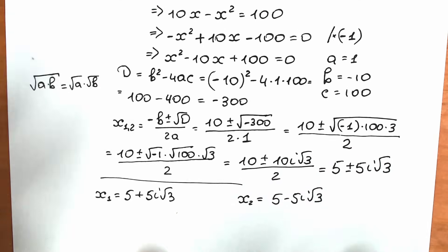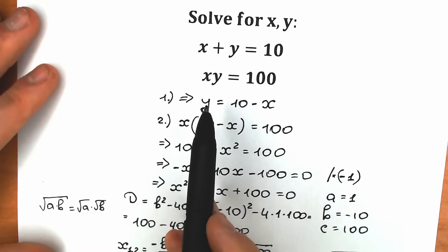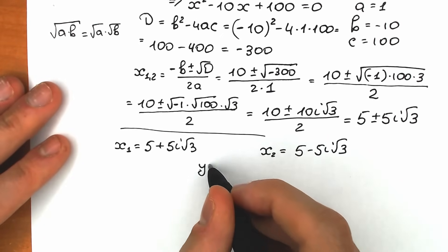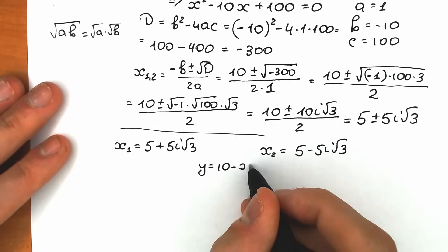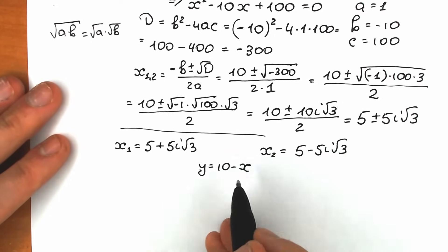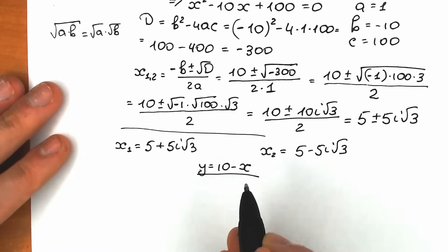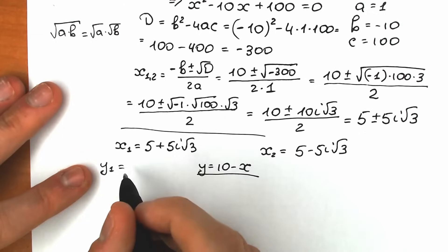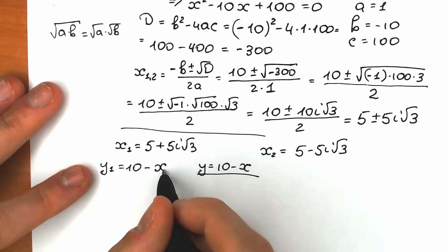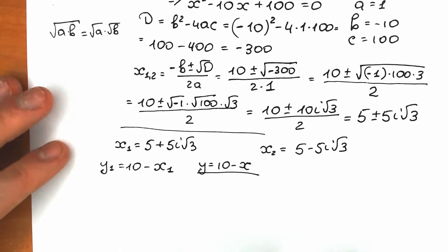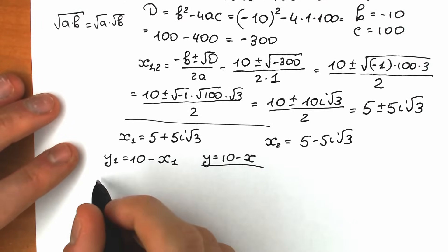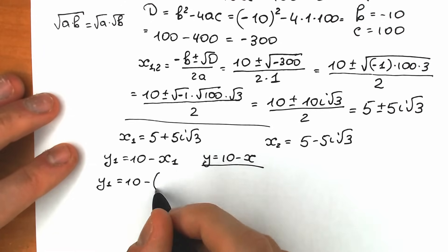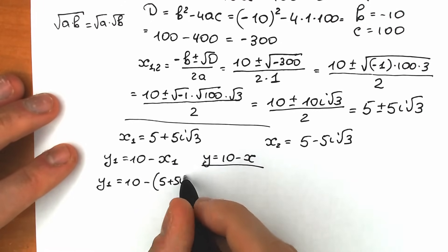Now let's go back to our substitution: y equals 10 minus x. We plug x₁ into this expression. So y₁ equals 10 minus x₁, which is 10 minus (5 plus 5i square root of 3).